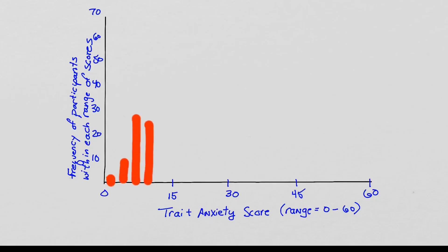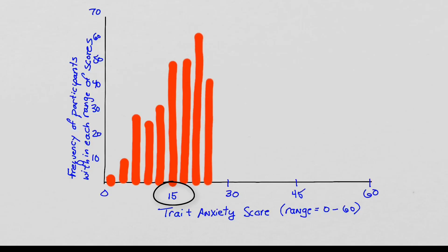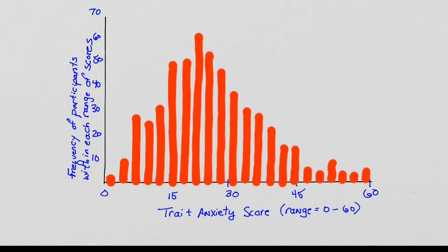Each red line is a bin. 50 people scored around 15 points on the Trey anxiety scale. Here, 15 people reported a score of 45 on the Trey anxiety scale.